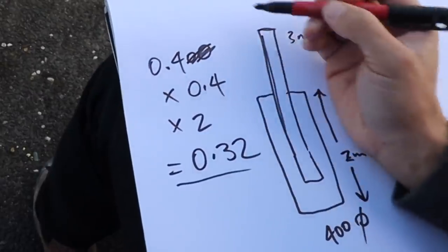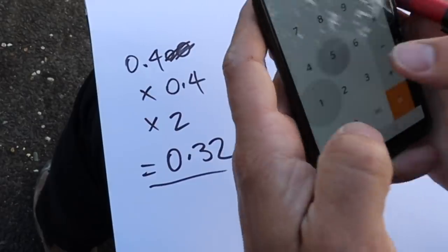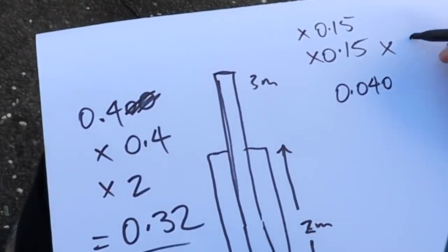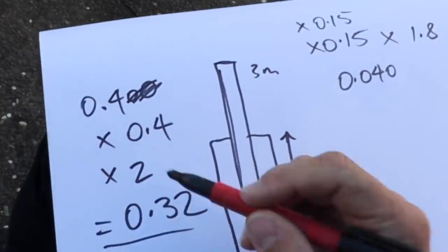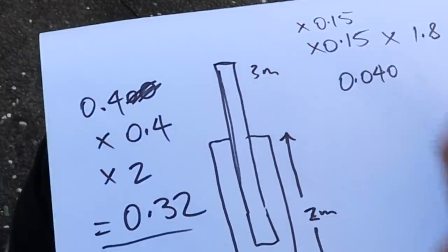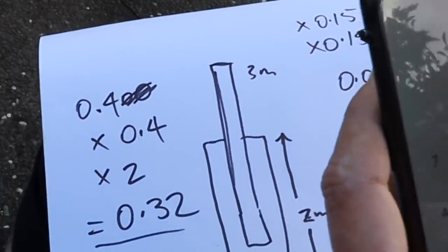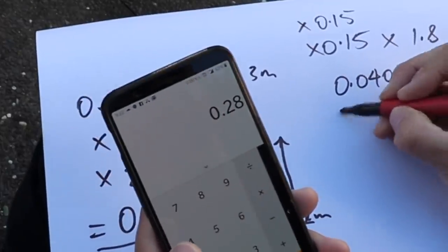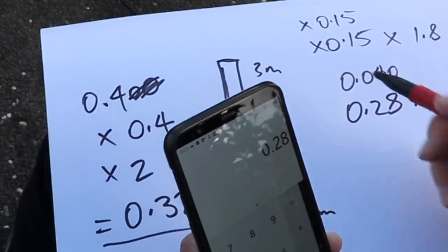So you've got to take the post out — you do it the same way. The post diameter: 0.15 times 0.15 times 1.8, because I came up 200 from the bottom instead of 100. Then you take your original 0.32 and subtract your post volume of 0.040, and that is your volume: 0.28. That's for one post hole.